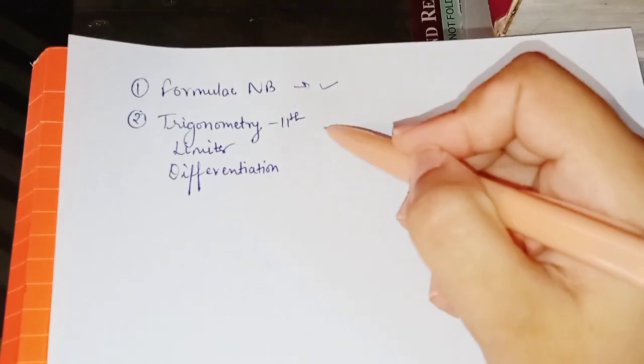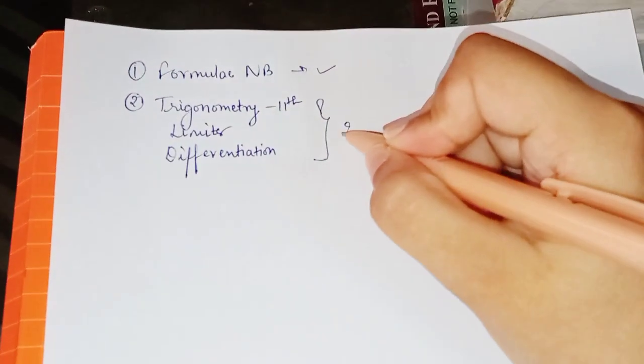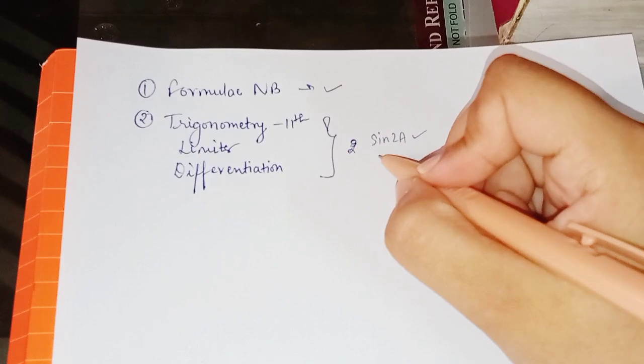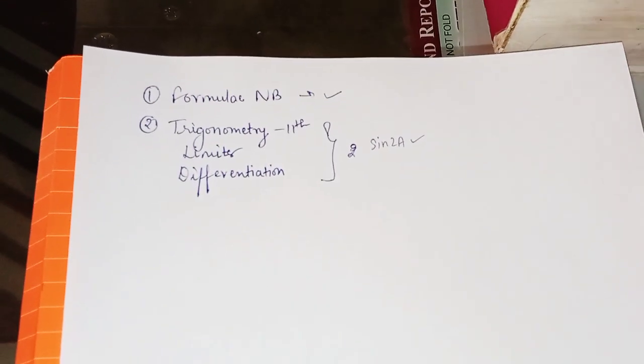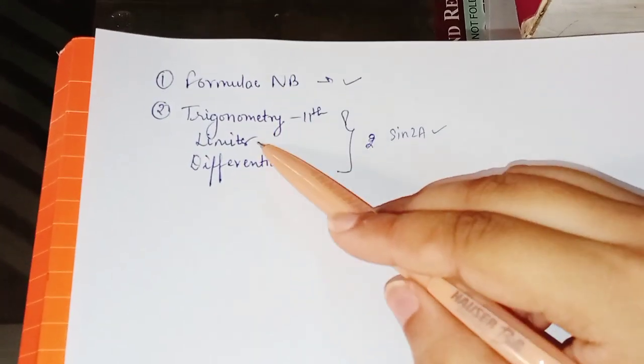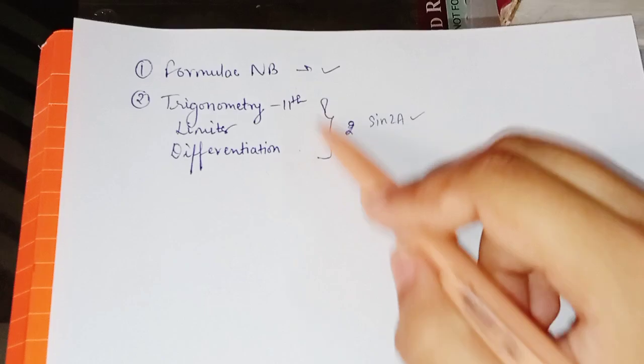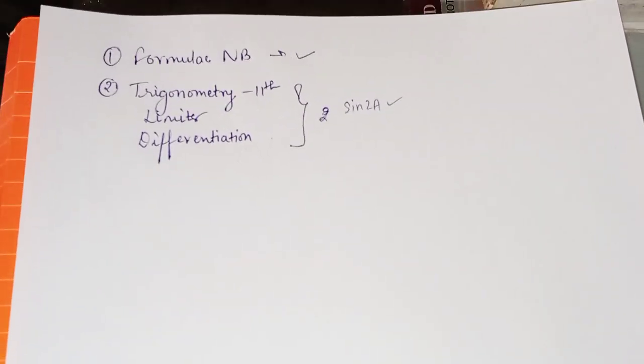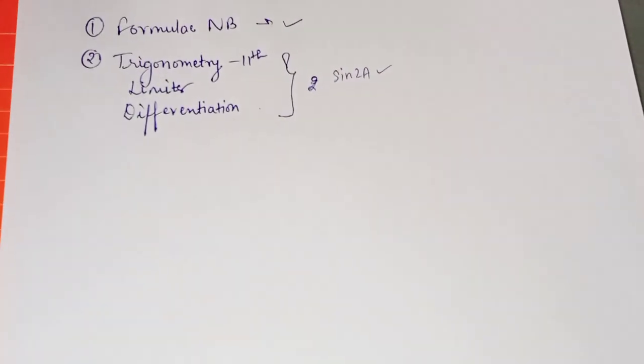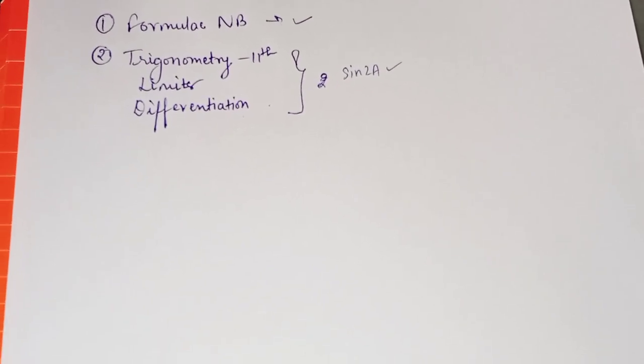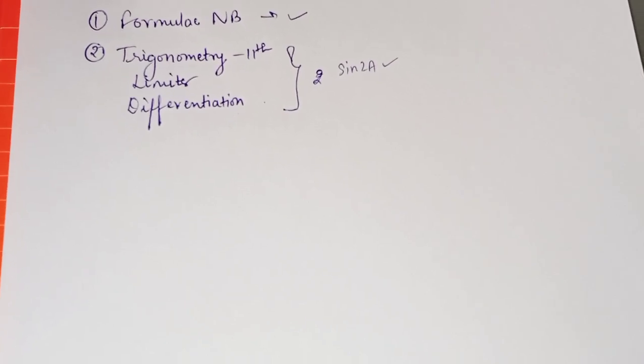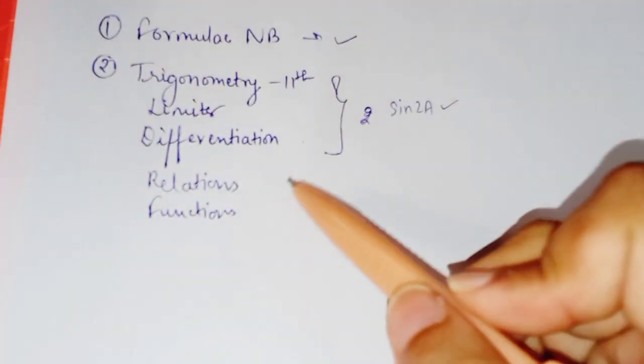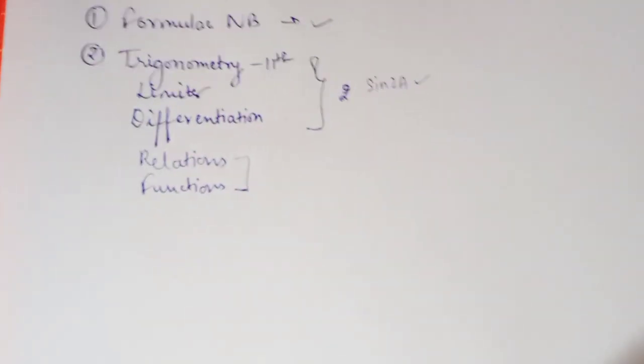Then you have to revise all these chapters of class 11, like those basic formulas like sine 2a that is equal to 2 sine a sine b, then sine a plus sine b, what is the formula. All these basic formulas of class 11 trigonometry, then limits and differentiation. Make sure to revise these three chapters and you can watch short videos, please practice these questions. Then you can start with 12th differentiation and integration. There is this chapter in indeterminate form of limits which is based on L'Hospital rule. You have done it in class 11th. And yes, relations and functions must be revised again from class 11th.